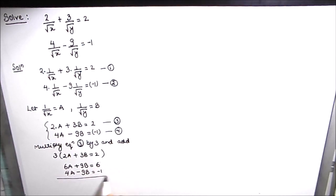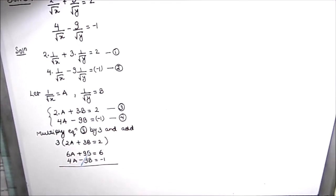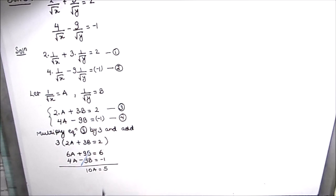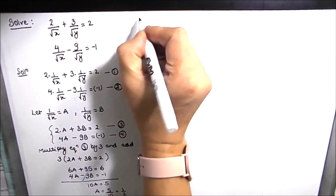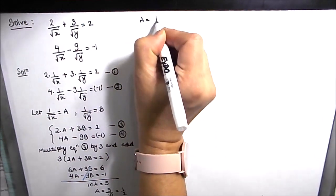Now we add the two equations. The 9B terms cancel, and we are left with 10A is equal to 5, or A is equal to 5/10, which equals 1/2. So A comes out to be 1/2.